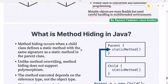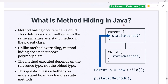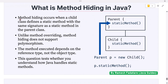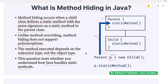What is method hiding in Java? Method hiding occurs when a child class defines a static method with the same signature as a static method in the parent class. Unlike method overriding, method hiding does not support polymorphism — the method executed depends on the reference type, not the object type. Interviewers ask this to test whether you understand how Java handles static methods and why they cannot participate in runtime polymorphism.